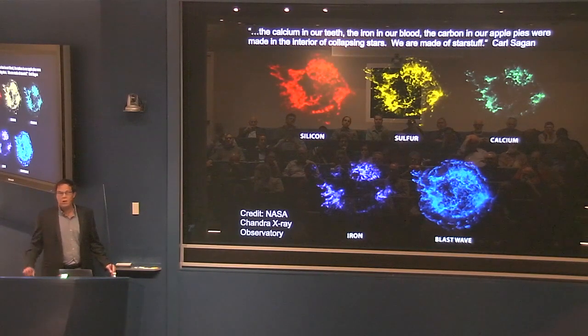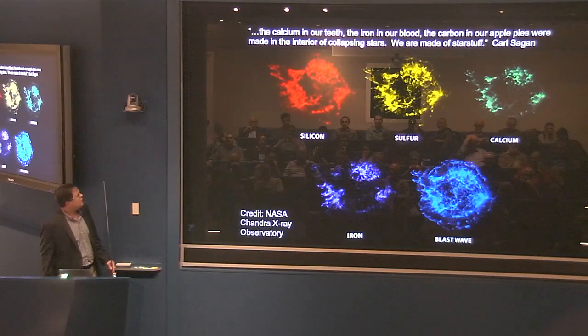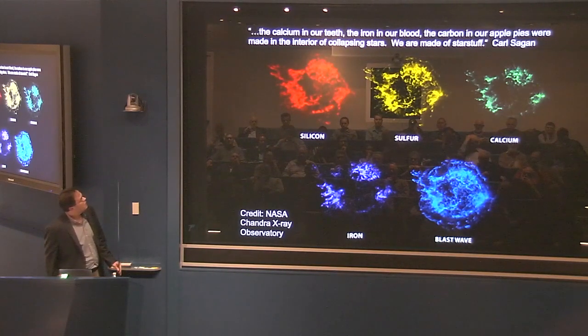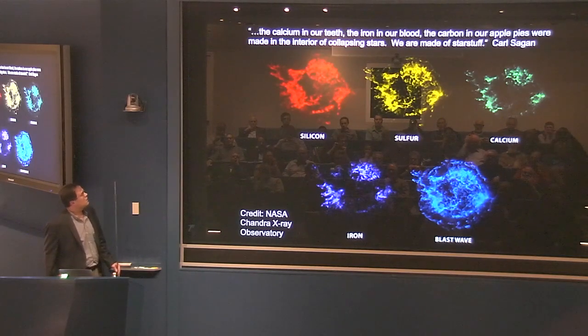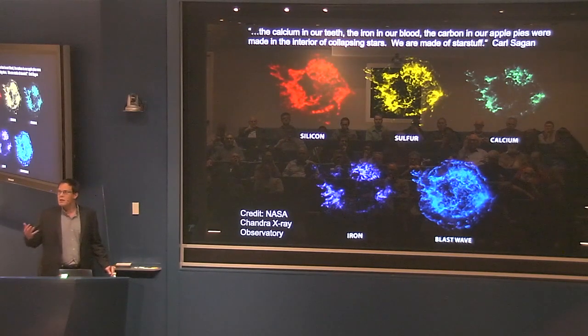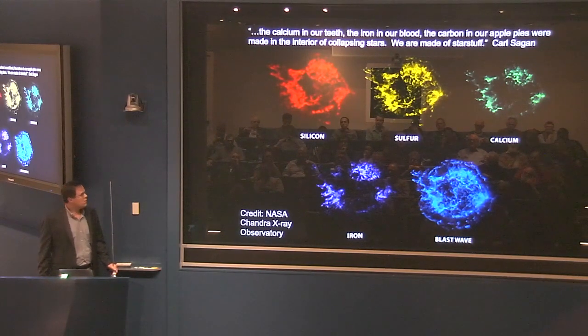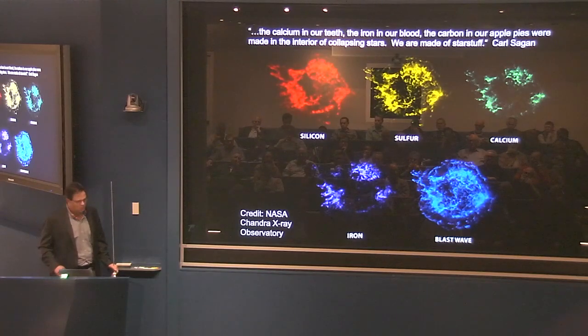This is the empirical basis for this famous Carl Sagan quote that the calcium in our teeth, the iron in our blood, the carbon in our apple pies, were made in the interior of collapsing stars. When he says we are star stuff, this is what it means. And we have quite a bit of confidence in this basic picture for quite a long time.